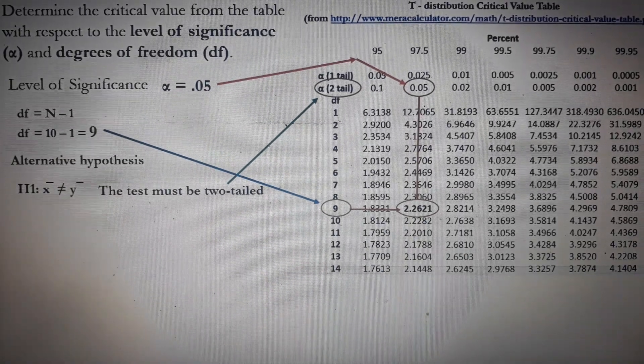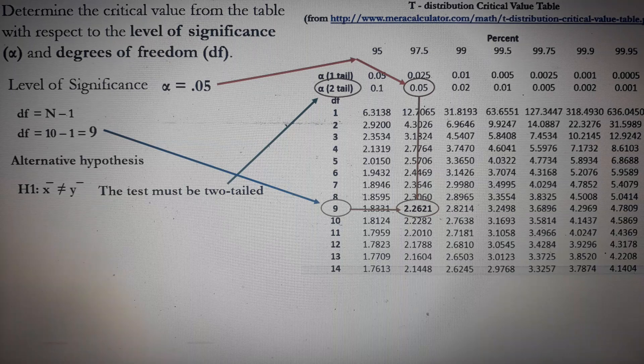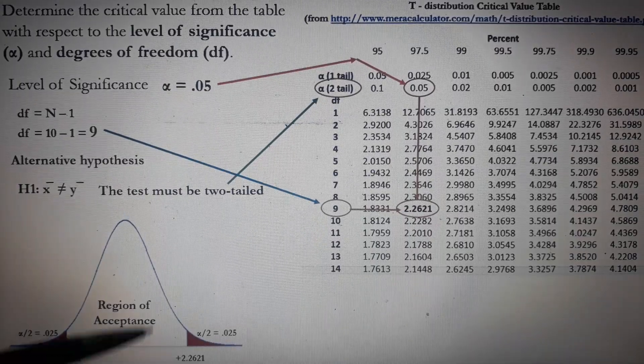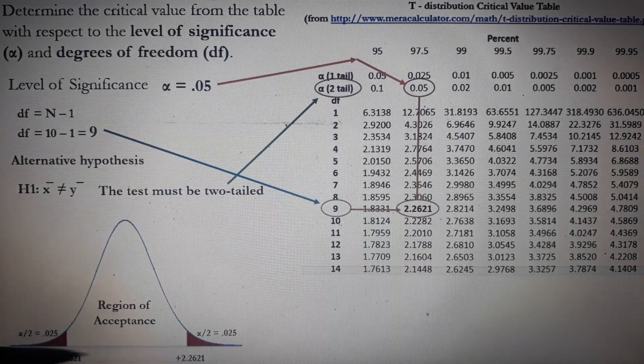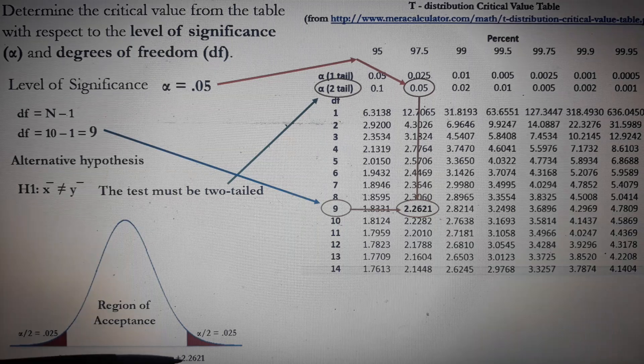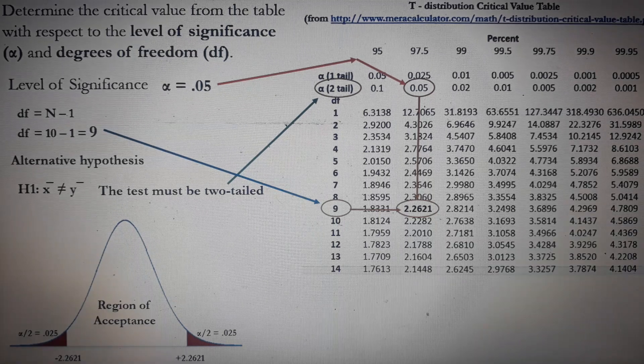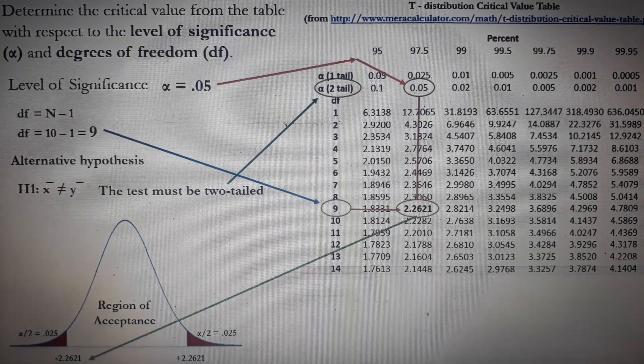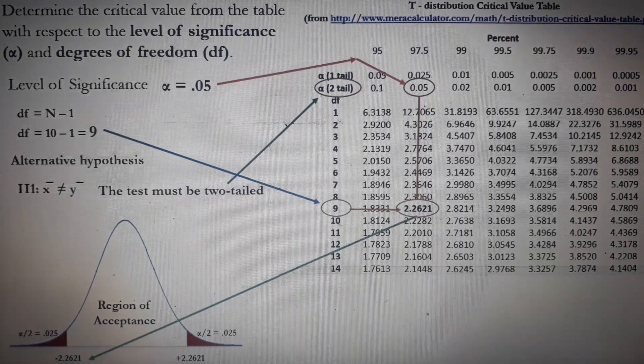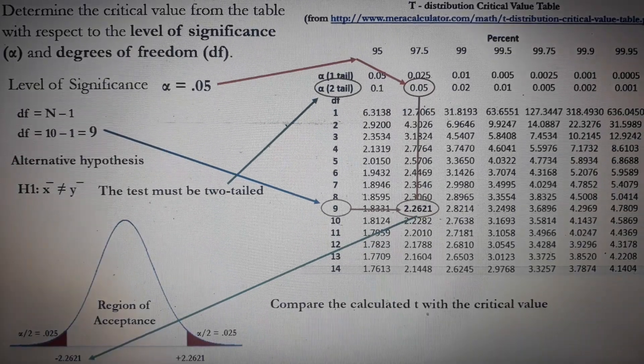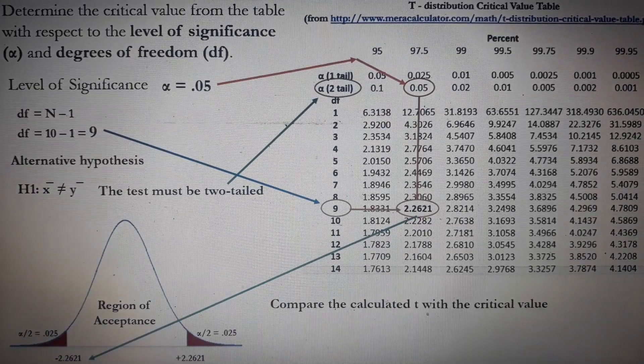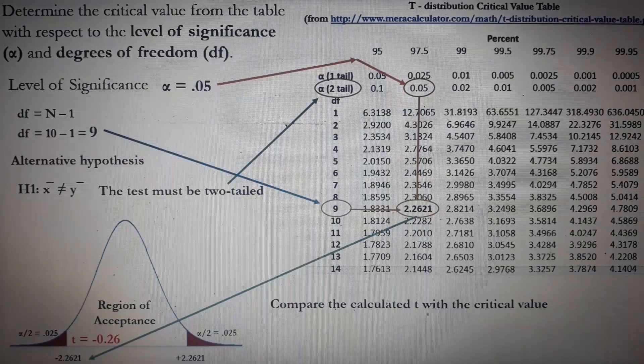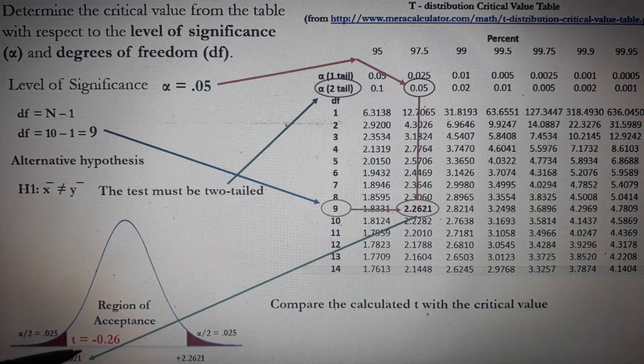Using again our bell curve, this is the region of acceptance. These are the two-tailed. On the right side, it's positive 2.261. On the left side, it's negative 2.261, which came from our table. Next is we need to compare the calculated T with the critical value. Remember that our calculated T is negative 0.26, which can be located in this part of our graph.